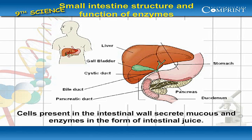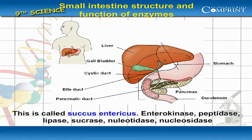Cells present in the intestinal wall secrete mucus and enzymes in the form of intestinal juice. This is called succus entericus.